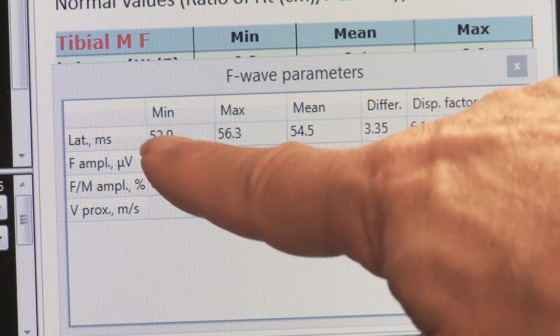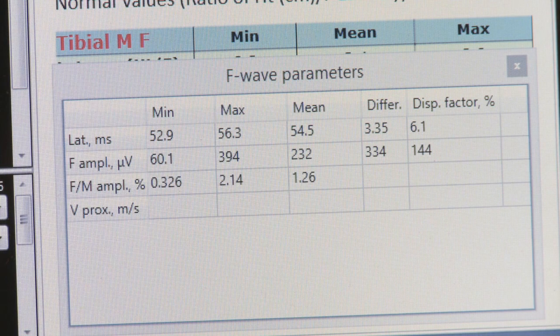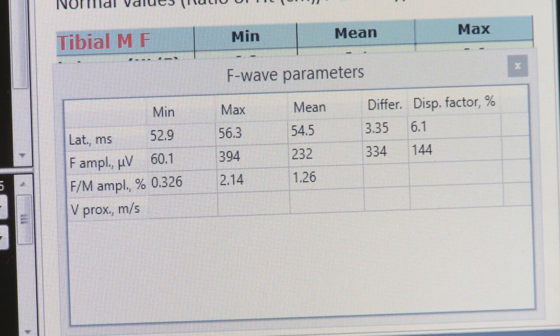The screen is going to show you the minimum F wave, the maximum, and the mean F wave. That's the end of the study for the tibial F wave.